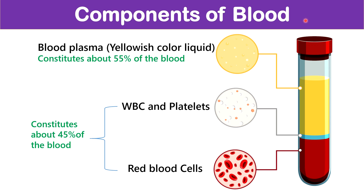Blood is composed of mainly four components: RBCs, WBCs, platelets, and plasma. When a sample of blood is centrifuged, we see three different layers — a bottom layer, a middle layer, and a top layer. The bottom layer contains the heavier molecules like RBCs, the middle layer contains WBCs and platelets, and the top layer contains the yellow colored light substance that is blood plasma. RBCs, WBCs, and platelets collectively constitute about 45% of the blood, while blood plasma constitutes about 55%.